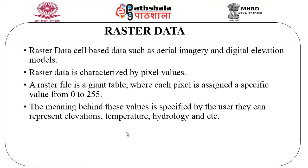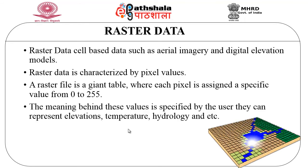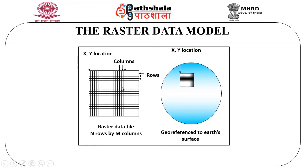The next one is raster data. Raster data is cell-based data which includes aerial imagery and digital elevation models. It is characterized by pixel values. A raster file is a giant table where each pixel is assigned a specific value from 0 to 255. The meaning behind these values is specified by the user and can represent elevation, temperature, hydrology, etc. The raster data file has n rows and m columns, referenced by an x, y location and georeferenced to the earth's surface.